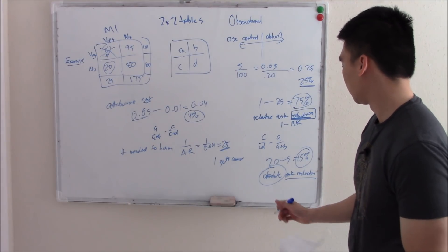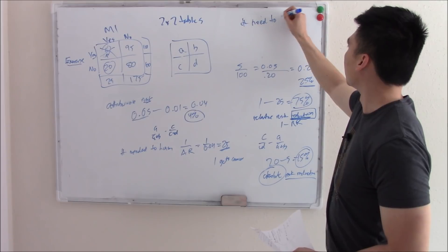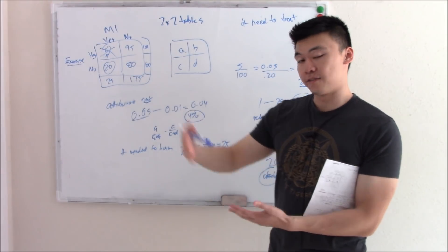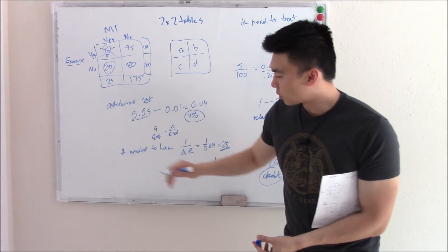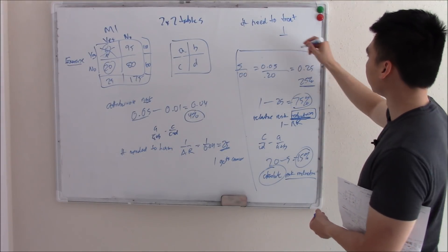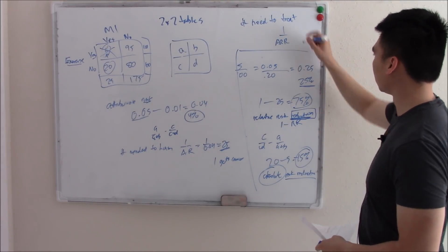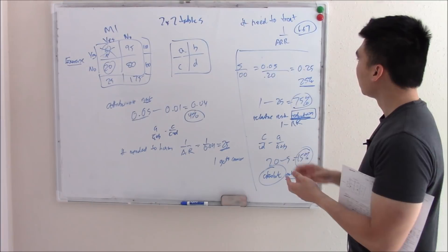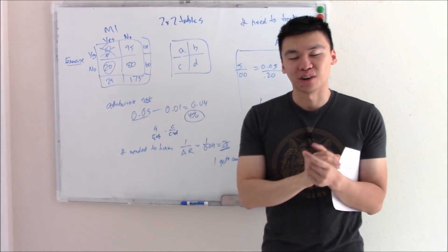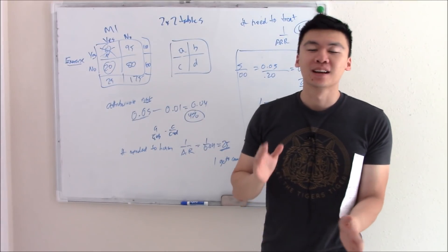Our last topic is number needed to treat. Just like number needed to harm for a harmful exposure, for a beneficial exposure we use number needed to treat. The formula is 1 over absolute risk reduction, or 1 over 0.15, which gives approximately 6.67. So for every 6.67 people you get to exercise, you prevent one MI. That covers your 2x2 tables, odds ratio, attributable risk, relative risk, and all related formulas. Review the notes if you want. Hope that clarifies things!